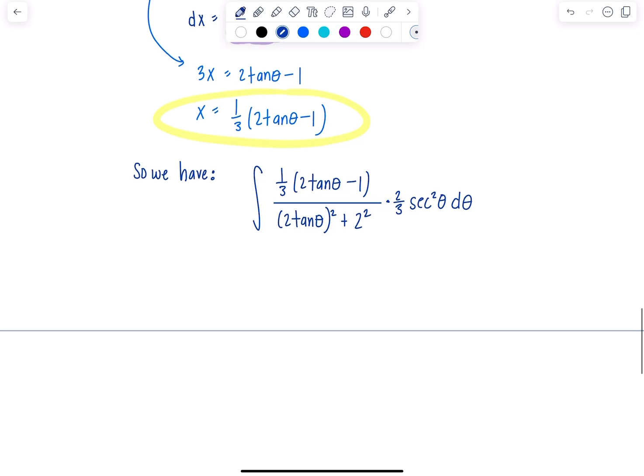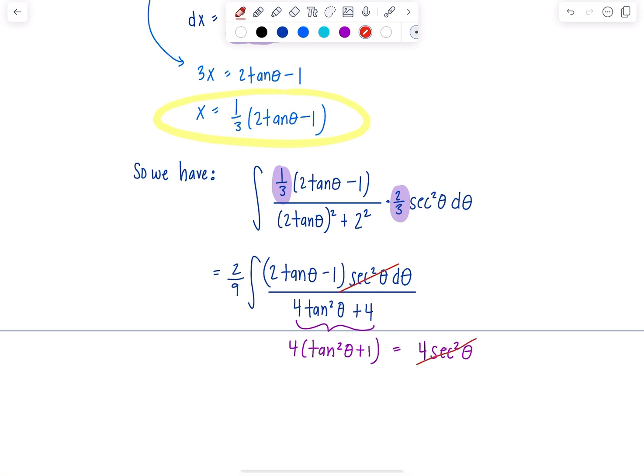Let's clean it up. Right away, I want to take this 1 third and 2 thirds out of the integral, so we have 2 ninths, 2 tan theta minus 1, and then I still have secant squared theta d theta over, this is 4 tan squared theta plus 4 in the bottom. There's no radical here, so just take out a 4. This is tan squared theta plus 1, which I can replace with secant squared theta in the denominator, which is fabulous. Here's secant squared theta in the numerator canceling with secant squared theta in the denominator. And then I just have this 4, which I can take outside.